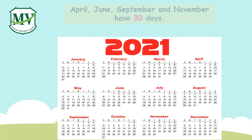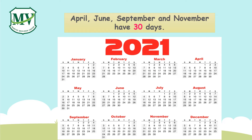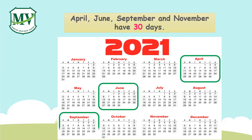And the months that have 30 days are the following: April, June, September, and November.